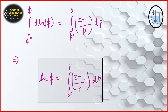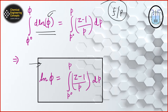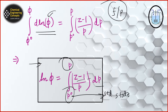The term f/P is the fugacity coefficient, denoted by φ. Using this, we can write: ln φ = ∫ from P° to P of [(Z − 1)/P] dP. Here P° represents the standard state and P is any desired pressure at which the fugacity value is required. This completes the first method — calculating fugacity using the compressibility factor.